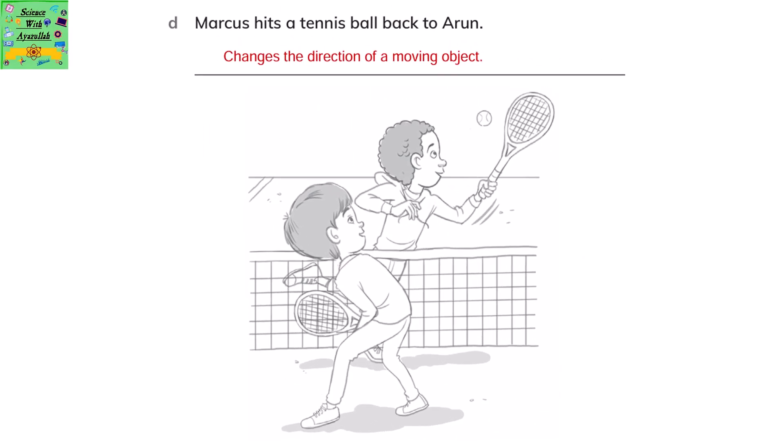Marcus hits a tennis ball back to Arun. This changes the direction of a moving object.